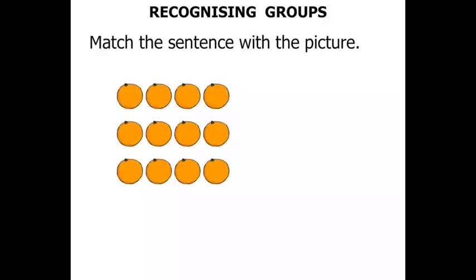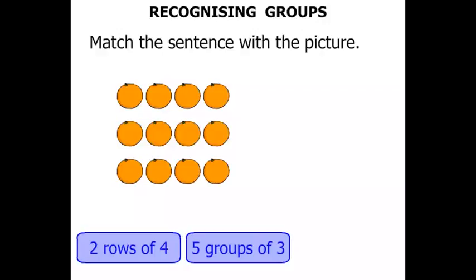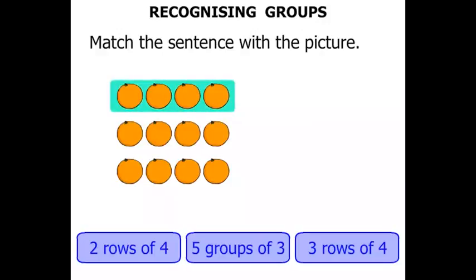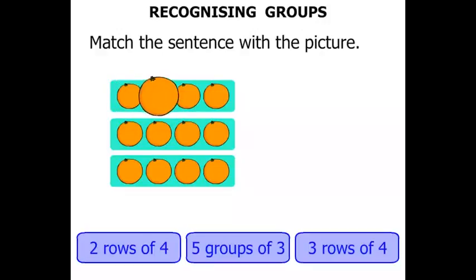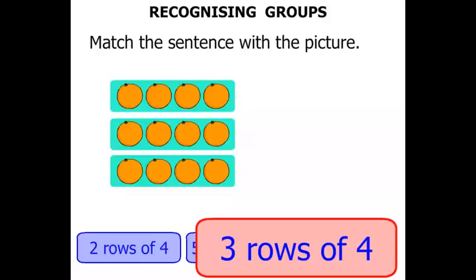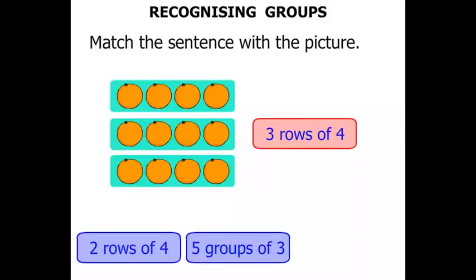Lots of oranges here. Do we have two rows of four, five groups of three, or three rows of four? Let's see. That's one row, two rows, three rows. How many in each row? One, two, three, four — four in each row. So we've got three rows of four.